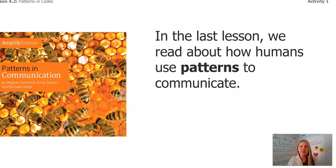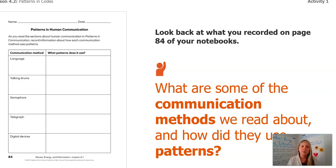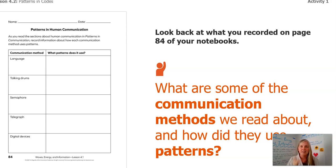In the last lesson, you and I read about how humans use patterns to communicate. You filled out this table and we are going to go looking back at page 84 right now. What did you write down? What are some of the communication methods we read about and how did they use patterns? Remember in language it was about letters, talking drums with the different pitches, remember how they used different parts of their hands, the semaphore — remember that's kind of crazy — the wooden boards arranged in different shapes, the telegraph using Morse code, and of course the digital devices. Things that we're on right now use binary code.